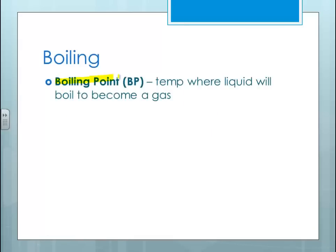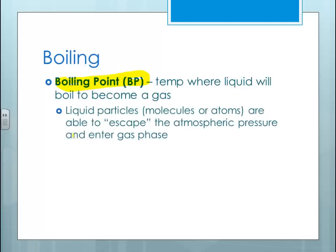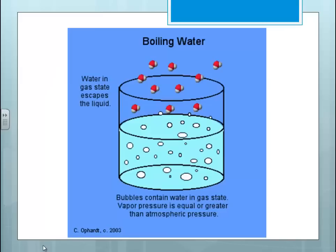The boiling point is the temperature where a liquid will boil to become a gas, and the liquid particles are able to escape the atmospheric pressure and enter the gas phase. When talking about the boiling point, the particles finally have enough kinetic energy to overcome the attractive forces between those particles and go into the gas state — water in the gas state escapes the liquid, getting enough kinetic energy to enter the gas phase.